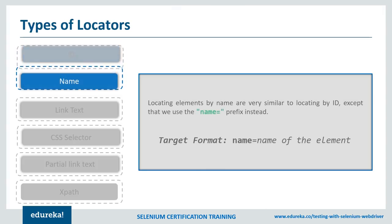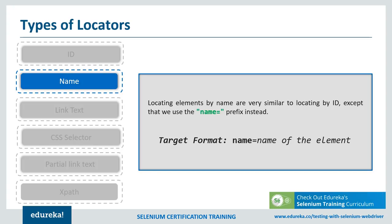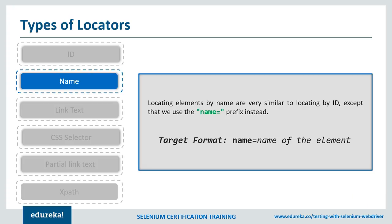Next, let's see the name locator. This is also an efficient way to locate an element with the name attribute, and is the second preference after IDs. Name attributes don't have to be unique in the page, but IDs are always unique. The first element with a name attribute value matching the locator will be returned. If no such element exists, a NoSuchElementException will be raised. Let's demonstrate and check how it works.